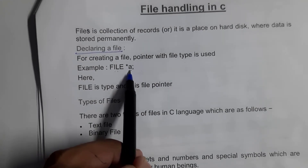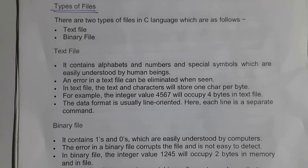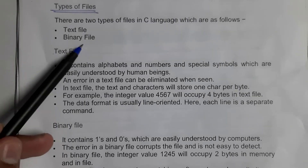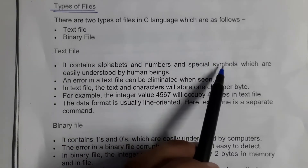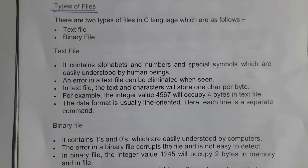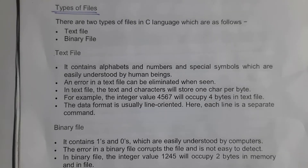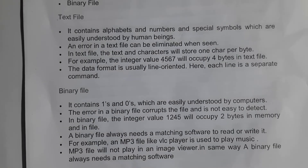In C language, files are classified into two types: text file and binary file. A text file contains alphabets, numbers, and special symbols which are easy to understand by human beings. For example, MS Word is a text file where we can write text, numbers, alphabets, and special symbols. If there is any error in a text file, it can be eliminated easily — for example, spelling mistakes are easy to correct.